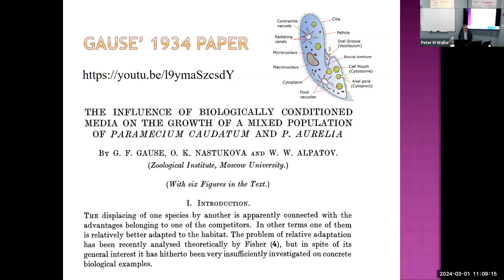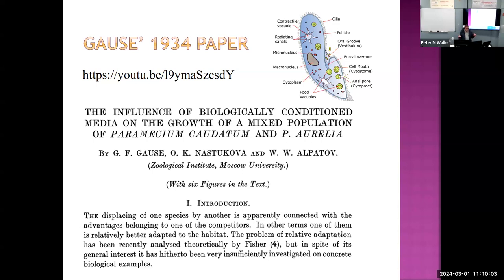Back to Gause: he conducted experiments with ciliates. You can see them scooping in algae as fast as possible to get all the food before other ciliates can — that's the competition, to scoop in algae as quickly as possible. He compared the growth of two species of ciliates in combined populations over time, and one finding was that the populations of both were less than they would be in monoculture, because each was consuming some of the food source.